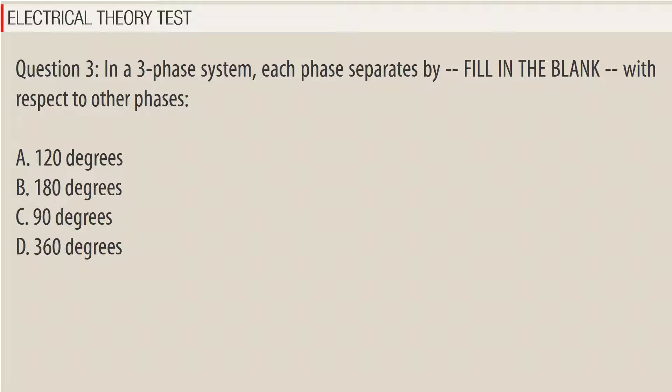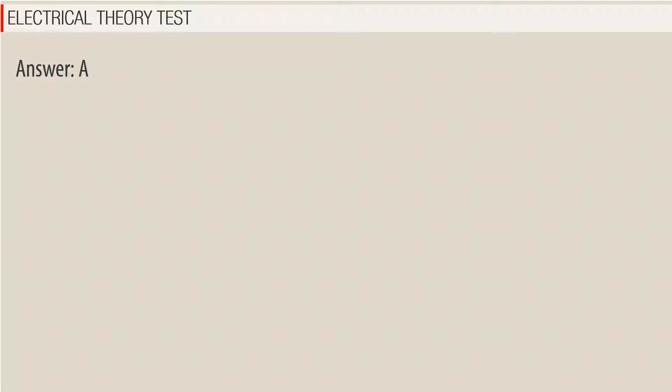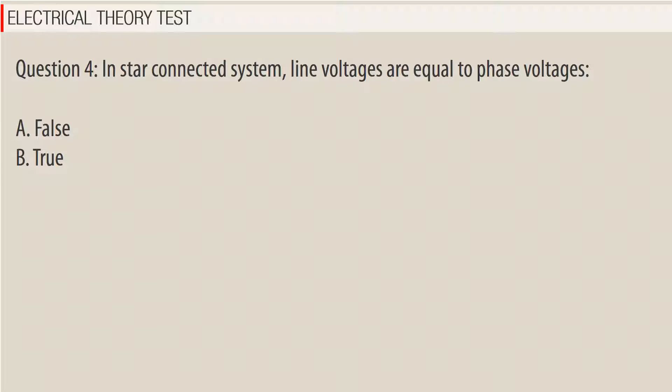Answer: A. Question 4: In a star-connected system, line voltages are equal to phase voltages. A. False, B. True.